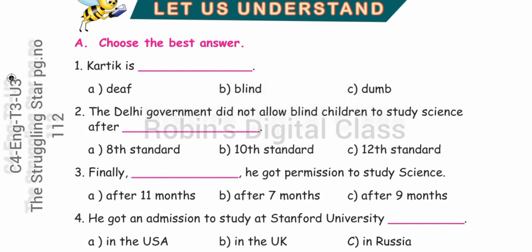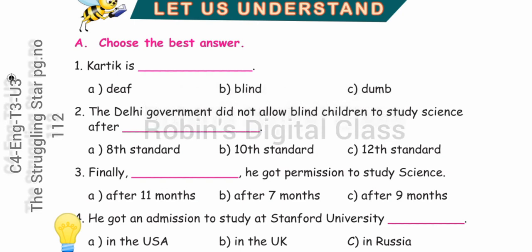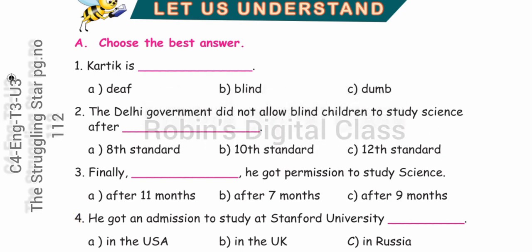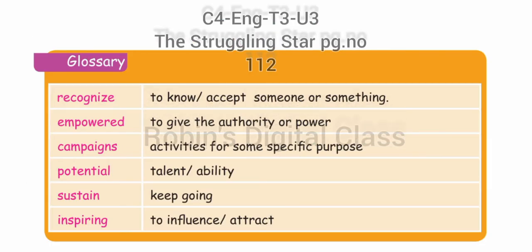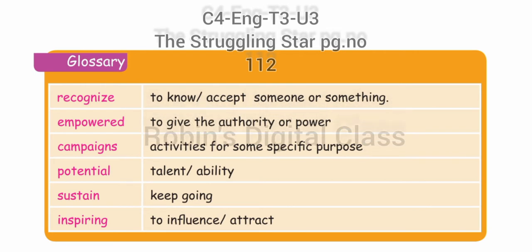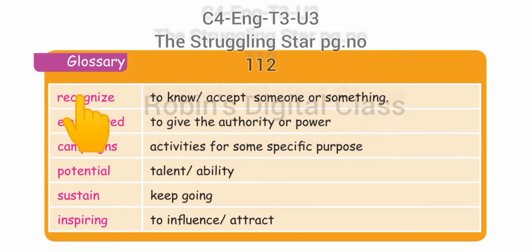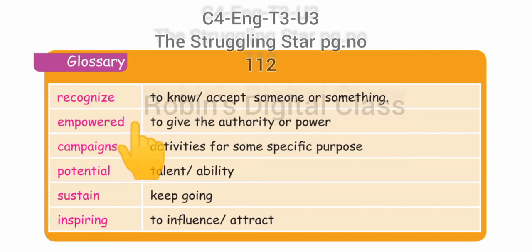Option A — in the USA. That's all for today; meet you in the next exercise. Class 4 English, Term 3, Unit 3 — Glossary Words. Recognize: to know or accept someone or something. Empowered: to give the authority or power.